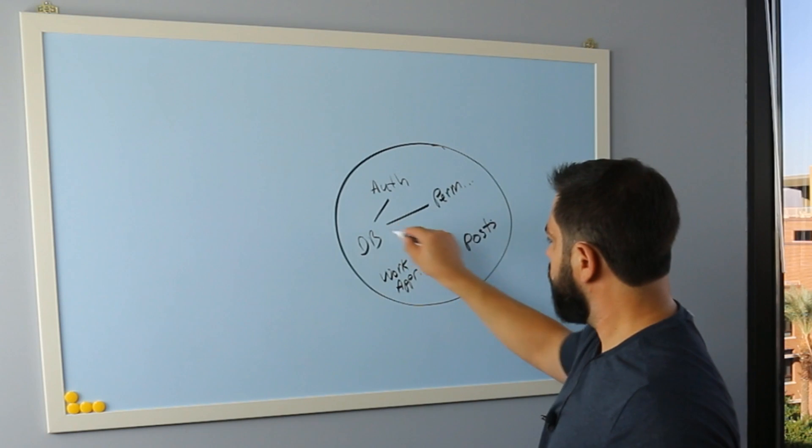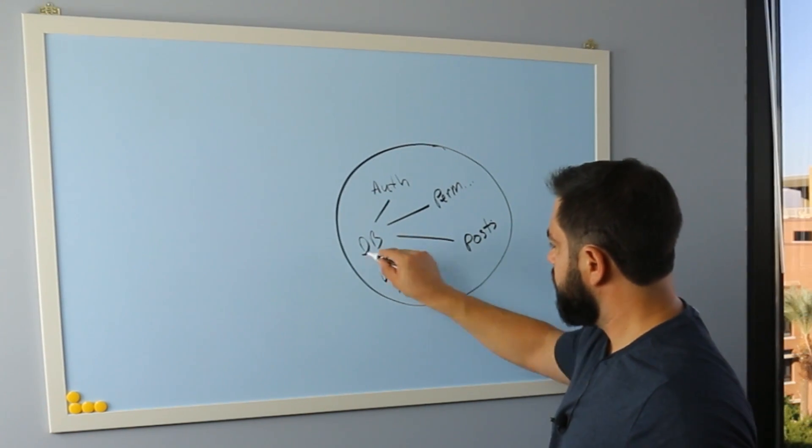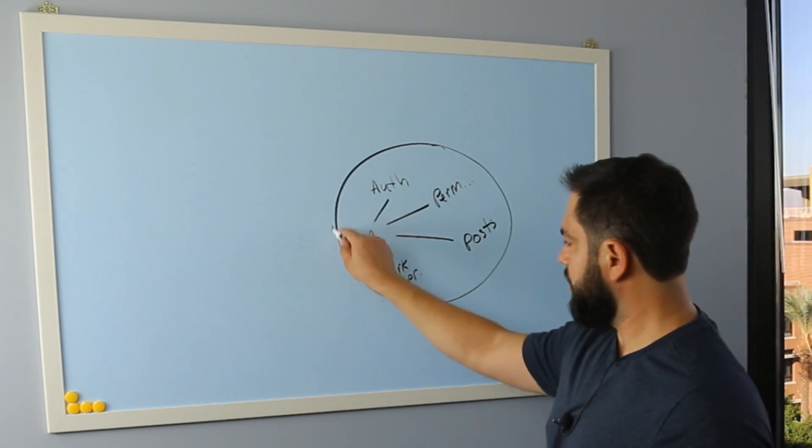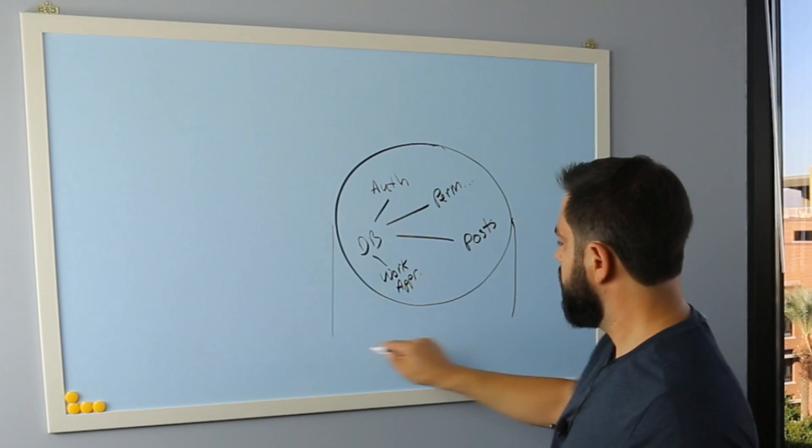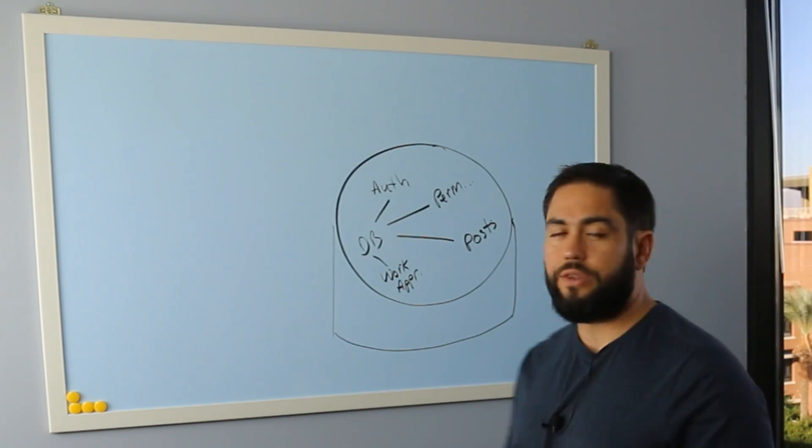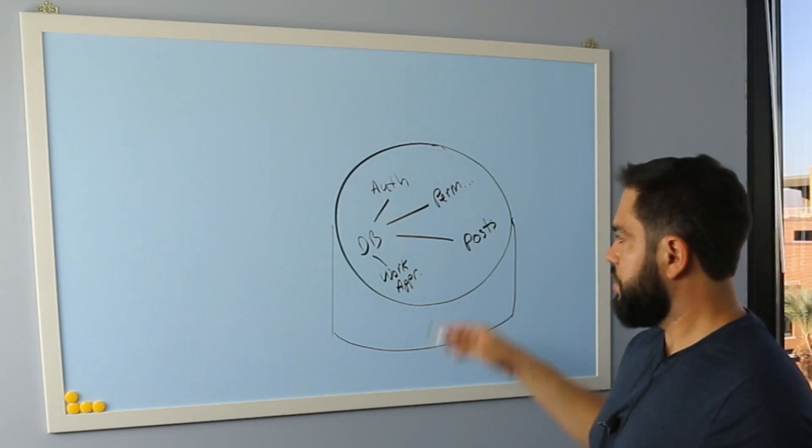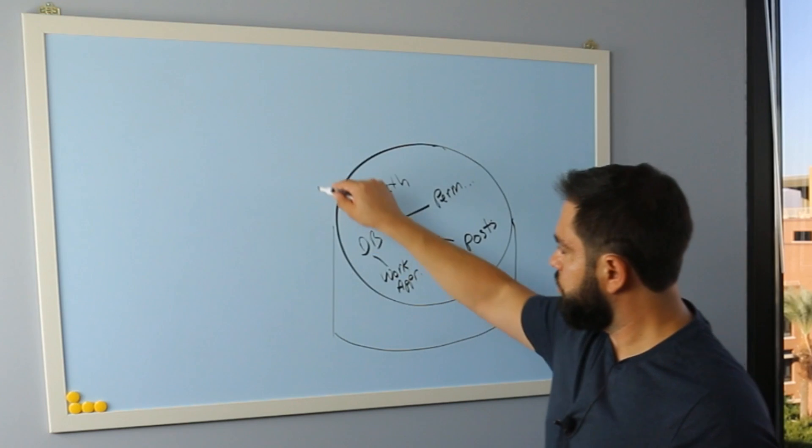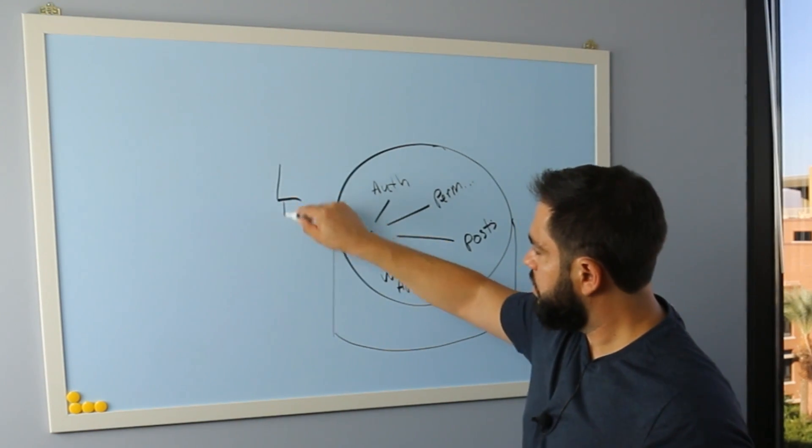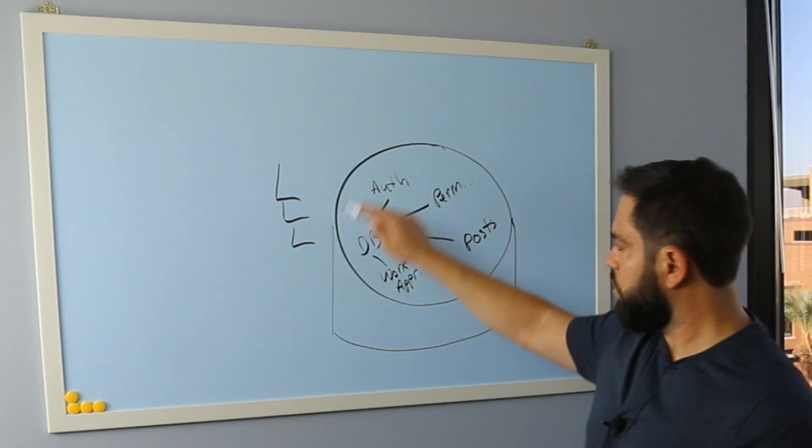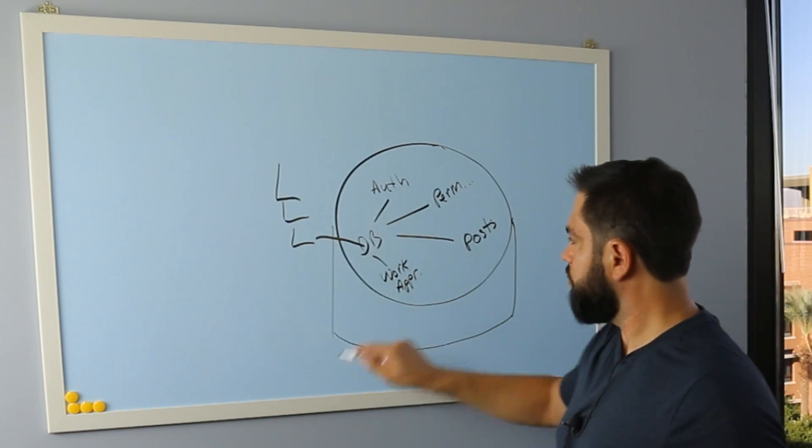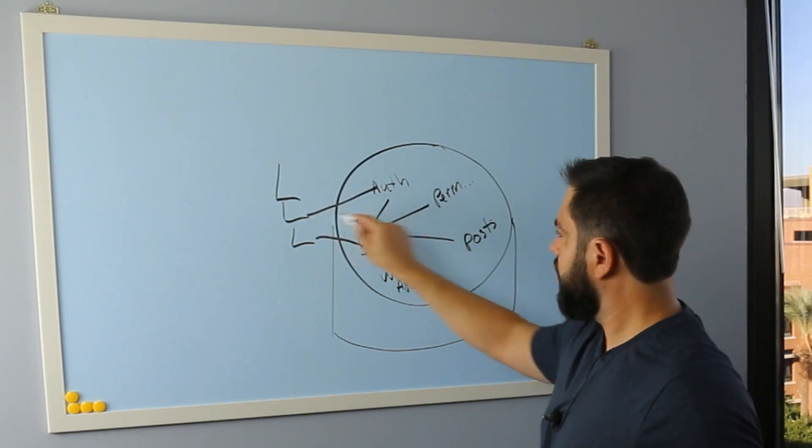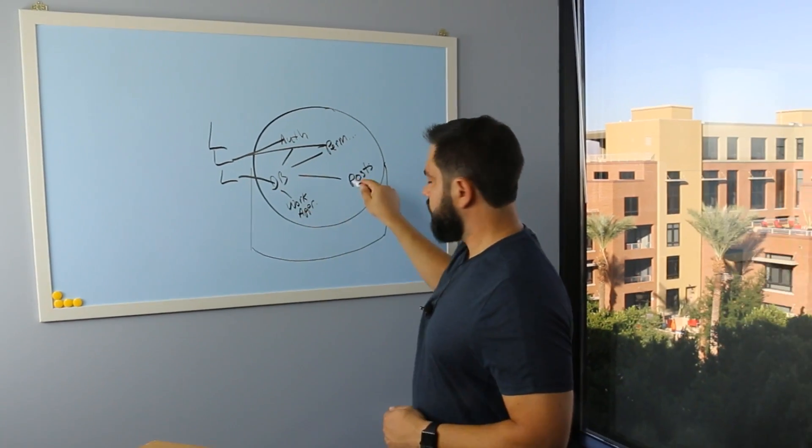They'll all communicate with the same database. They'll be on the same server, so they'll all be on the same machine and they'll also use the same file system. So your database files might be right there, authentication, everything right there.